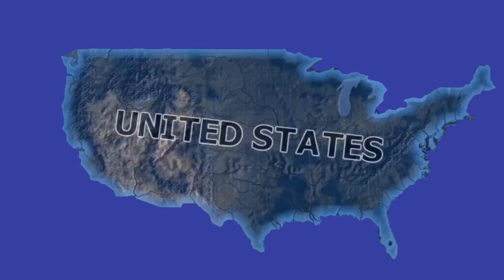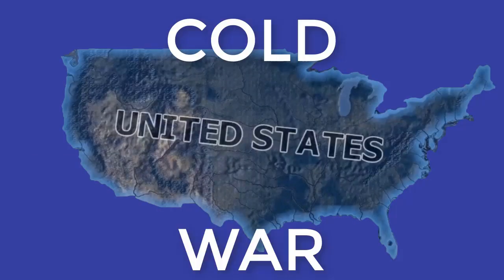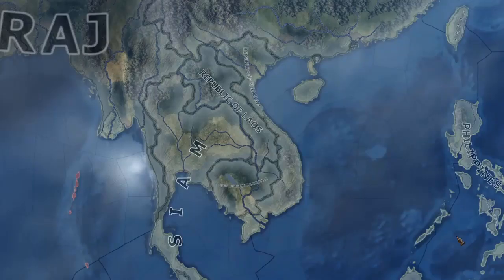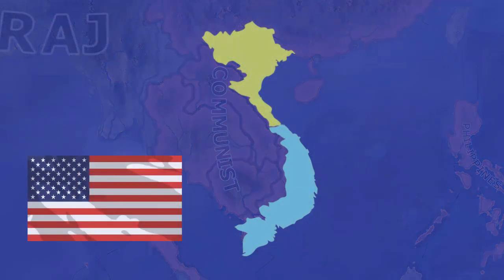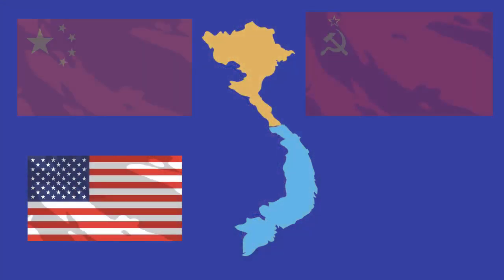This theory was dominant in United States foreign policy during the Cold War. It is the idea that if one country becomes communist, then soon the surrounding countries would also turn communist, thus creating a domino effect. And for the exact opposite reasons, China and the Soviet Union supported the communist North Vietnamese.